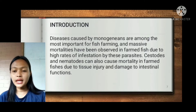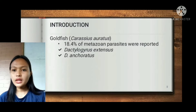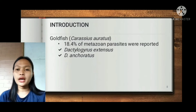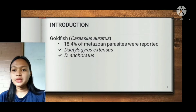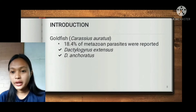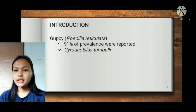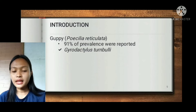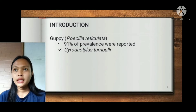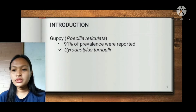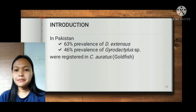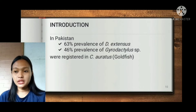Cestodes and nematodes can also cause mortality in farmed fishes due to tissue injury and damage to intestinal functions. In goldfish (Carassius auratus), 18.4% of metazoan parasites were reported, and the parasites present were Dactylogyrus extensus and D. ancoratus. In guppy (Poecilia reticulata), 91% prevalence was reported, with the present parasite being Gyrodactylus turnbulli. In Pakistan, 63% prevalence of D. extensus and 46% prevalence of Gyrodactylus sp. were registered in C. auratus.